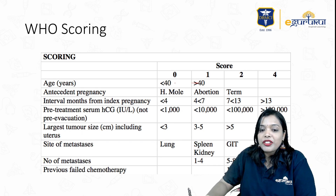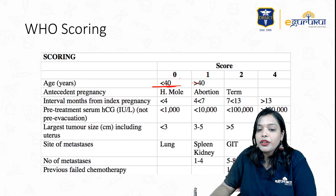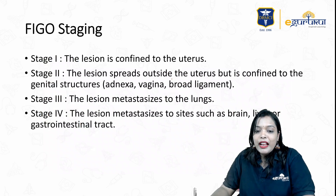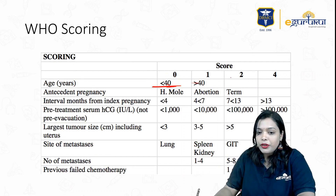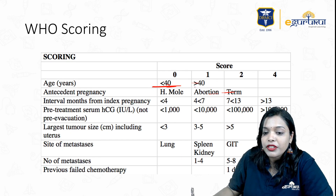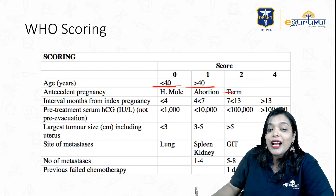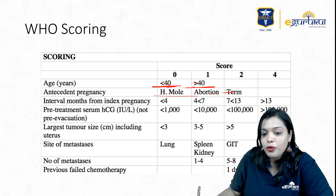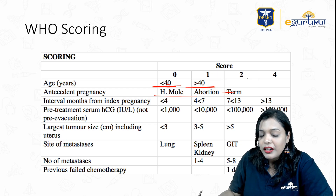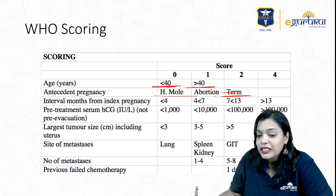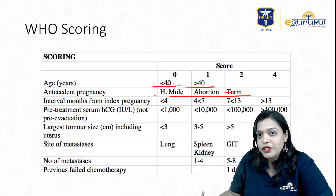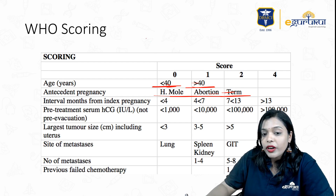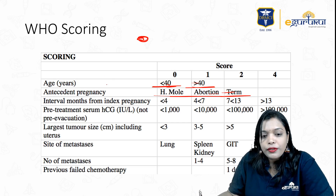If age of the patient is less than 40 years, you give a score of 0. Like in our patient, the age was 30 years, so I'm going to give her a score of 0. If age is more than 40, you give a score of 1. For antecedent pregnancy: H-mole gives a score of 0; abortion gives a score of 1; term pregnancy gives a score of 2. Our patient had antecedent pregnancy of molar evacuation, so again a score of 0.